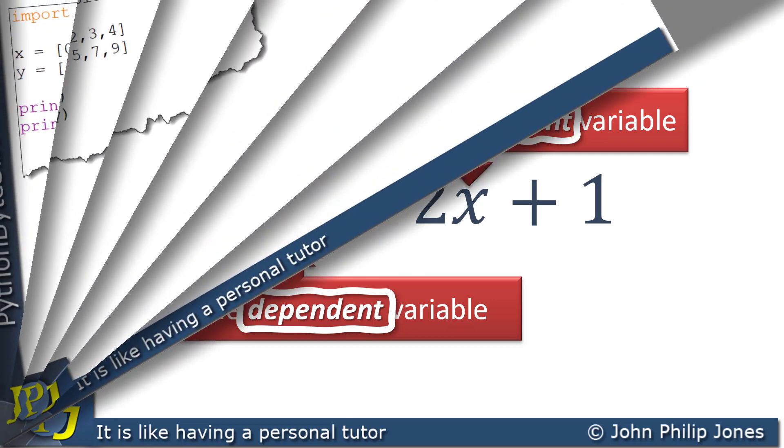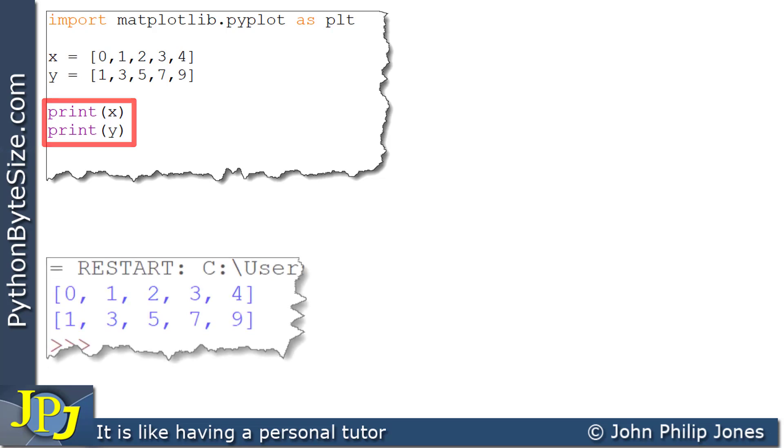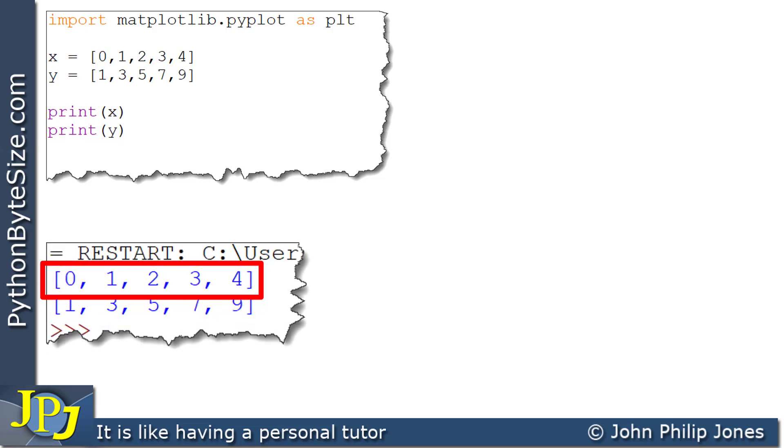So here you can see I've shown part of the program we've seen in the previous video, and we set up x and y to be the literal values, and then I print out x and y. And when this executes, what we should see is the following. We can see that these are the values stored in the list x, and these are the values that are stored in the list y.